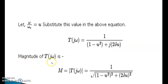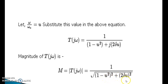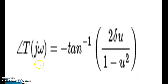The magnitude of T(jω) is: M = |T(jω)| = 1 / √((1 - u²)² + (2ζu)²). The angle of T(jω) is: ∠T(jω) = -tan⁻¹(2ζu / (1 - u²)).